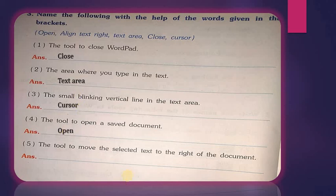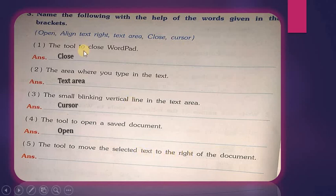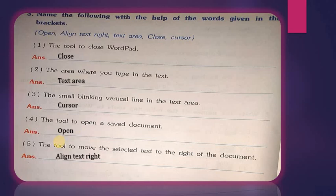The fifth question: the tool to move selected text to the right of the document. We just discussed the alignment tools — Align Text Left, Right, and Center. To move our selected text to the right side, the correct answer is Align Text Right. These are the activities we learned in this lecture: naming the tools and identifying their uses.